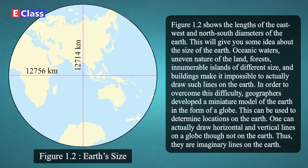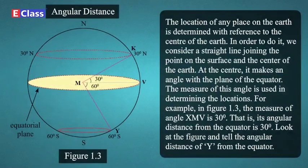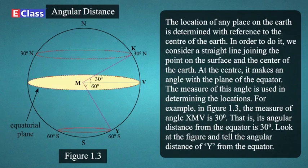One can actually draw horizontal and vertical lines on a globe, though not on the earth. The location of any place on the earth is determined with reference to the center of the earth. We consider a straight line joining the point on the surface and the center of the earth. At the center, it makes an angle with the plane of the equator. The measure of this angle is used in determining the locations. For example, in Figure 1.3, the measure of angle XMV is 30 degrees — that is, its angular distance from the equator is 30 degrees.